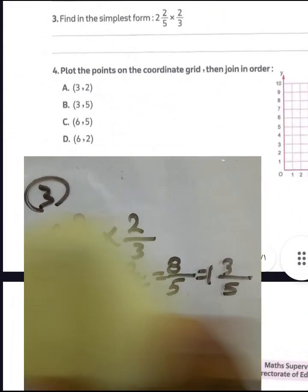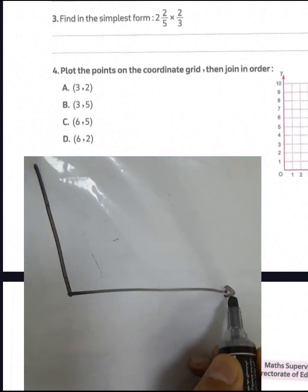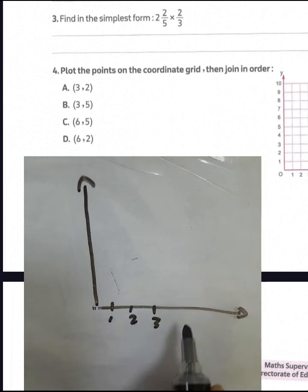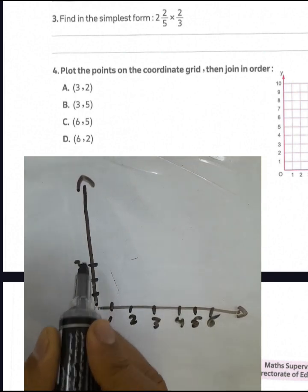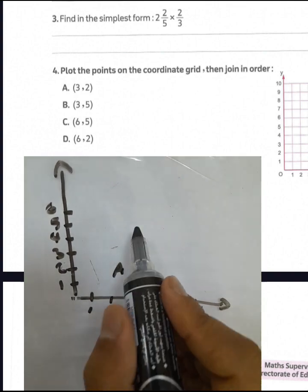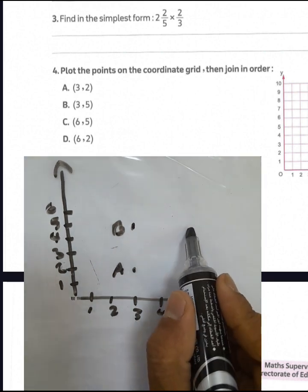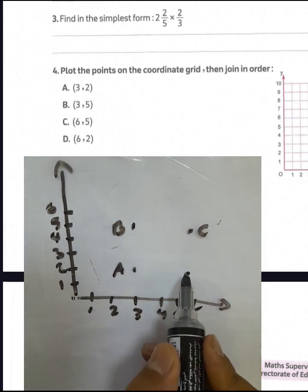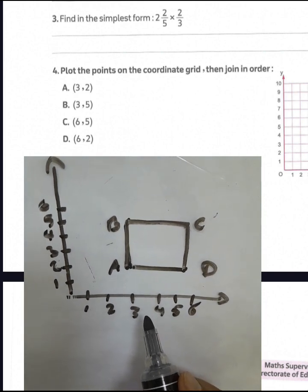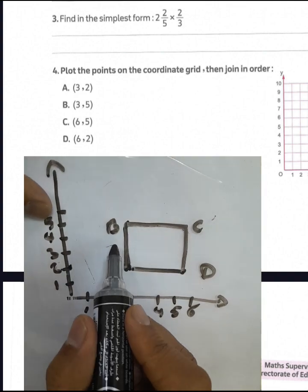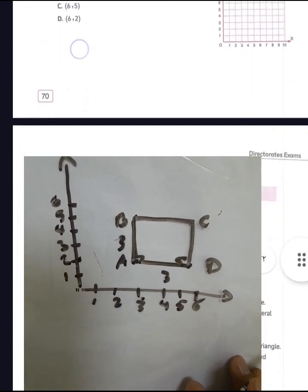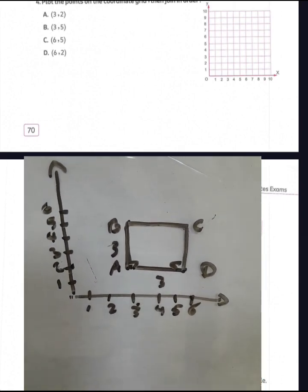Next question: plot the points on the graph. We have x-axis and y-axis with values 1 through 6. The first point A is (3, 2), point B is (3, 5), point C is (6, 5), and point D is (6, 2). Then we have a rectangle — or actually a square — because counting from 2 to 5 gives 3 units, and from 3 to 6 also gives 3 units. So all dimensions are equal, making it a square.